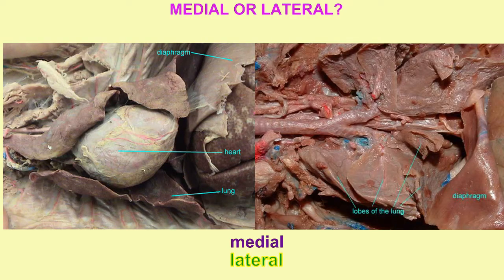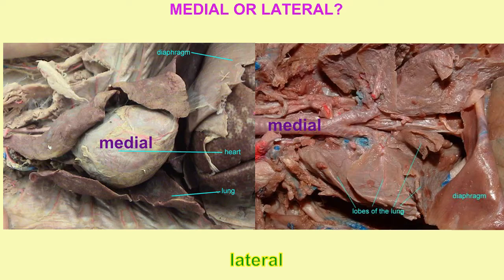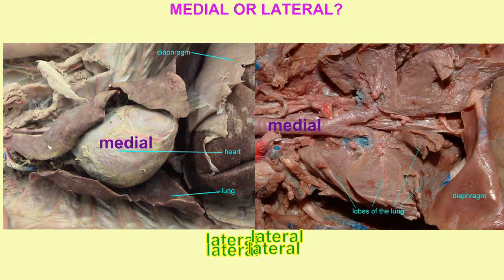This is relative. So for example, in these images, the lungs are lateral to the heart or to the trachea, which lie along the midline, so they would be medial. The heart and the trachea are medial; the lungs are lateral.